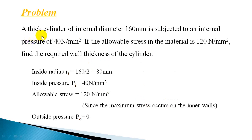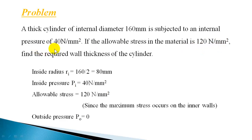Let us work out another example. A thick cylinder of internal diameter 160 mm is subjected to an internal pressure of 40 N/mm². If the allowable stress in the material is 120 N/mm², find the required wall thickness of the cylinder. Internal pressure is known and the maximum allowable stress — which is the inside hoop stress — is known. Inside radius is 80 mm, inside pressure is 40 N/mm², and allowable stress is 120 N/mm².